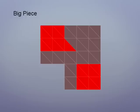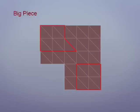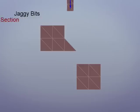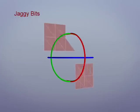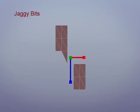So we can make one object out of this selection and call it 'jaggy bits.' The remaining object can be called 'middle section.' Let's remove the object called middle section. Now we can see the object called jaggy bits and how its polygons aren't touching.